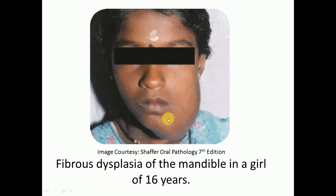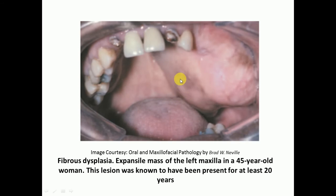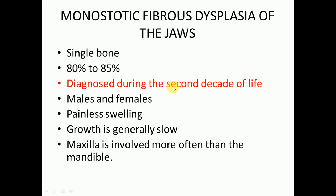Here we also have fibrous dysplasia as an expansile mass of the left maxilla in a 45-year-old woman. This lesion was known to have been present for at least 20 years, meaning fibrous dysplasia grows very slowly.